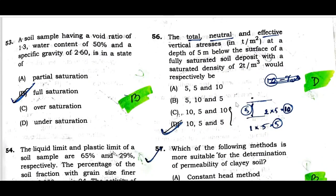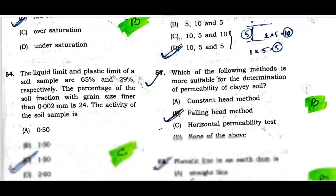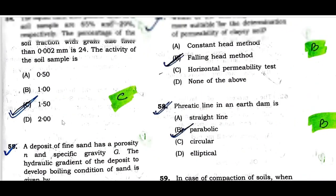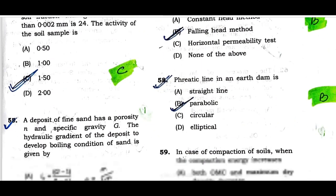Question number fifty-three: For soil having void ratio 1.3, water content, and specific gravity given — applying the saturation formula, the answer is full saturation. Option B is correct. Question number fifty-four: Given liquid limit and plastic limit of a soil sample, the activity of the soil fraction is calculated and equals 1.50.